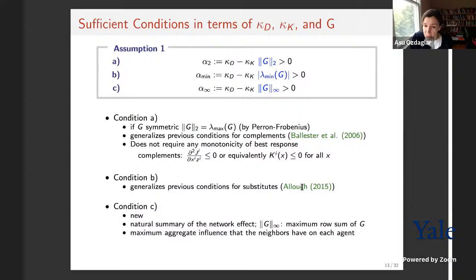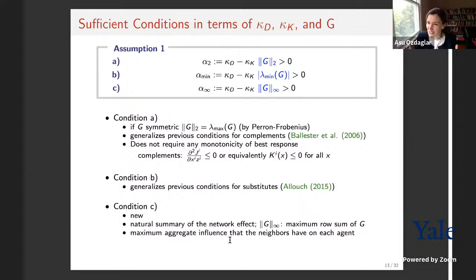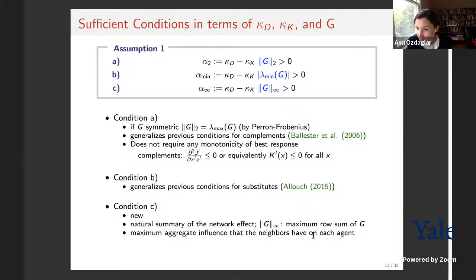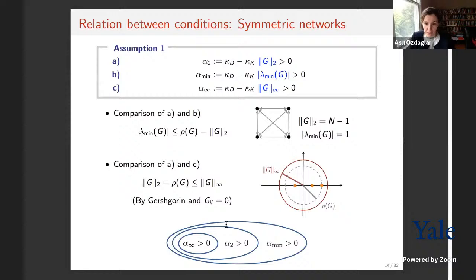The condition α_∞ based on ‖G‖_∞ — the maximum row sum — seems a very natural summary of network influence since the row sum captures the aggregate influence neighbors exert on an agent. These three conditions cover different kinds of networks, and the next question is which gives the largest set of network games for which equilibrium properties can be established. For symmetric networks, λ_min ≤ ρ(G) = ‖G‖_2 ≤ ‖G‖_∞ by Gershgorin's theorem, so α_min gives the weakest sufficient condition and therefore the largest admissible class of networks.